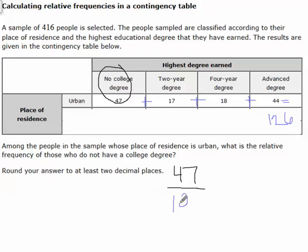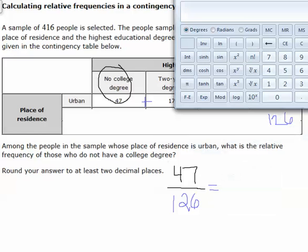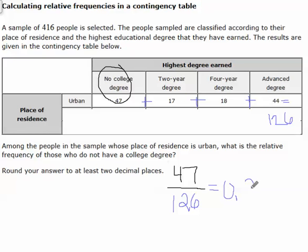Our total is always our denominator or our whole. The part we're looking at is the non-college-degree people, which is 47. Put it in our calculator: 47 divided by 126 gives us 0.373. We want to round to two numbers after the decimal — the number after the seven is a three, so it stays a seven. Our relative frequency is 0.37.